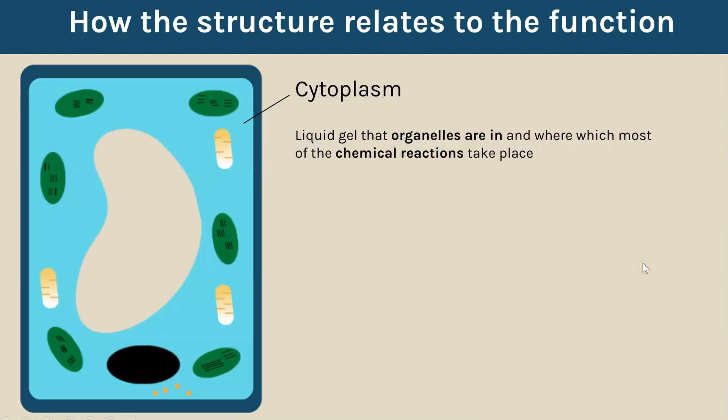So we focus on now what the actual functions are of these different structures. We talked about cytoplasm and this is a liquid gel so it's quite a thick liquid and this is what the organelles are suspended in and what we mean by organelle is the different structures you find within the cell. So these structures or organelles are floating in this thick liquid. It's also where most chemical reactions take place.